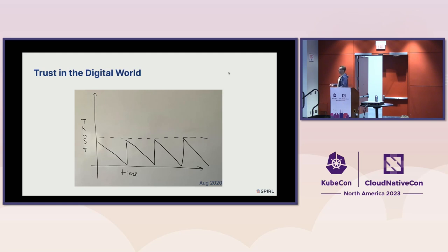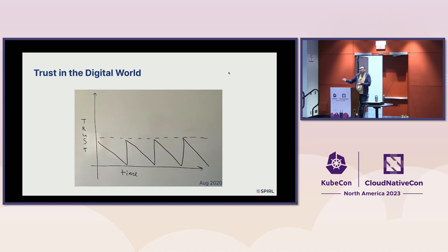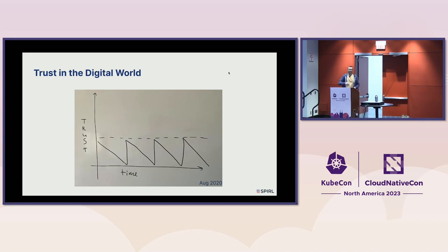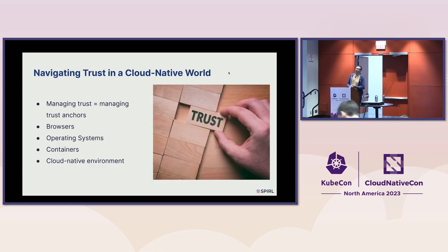There's this idea of erosion of trust over time in the digital world, and the same applies to digital identities. We used to issue certificates for web servers for three years, then two years, then one year — manually putting private keys in. Over time you have less trust in those certificates and private keys because if someone compromised that server, they may already own the private key. Let's Encrypt now issues certificates for 90 days, so your trust goes up and down with digital identities over time.